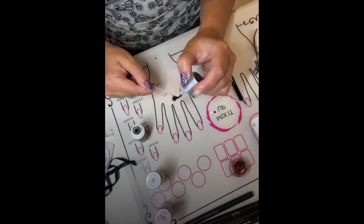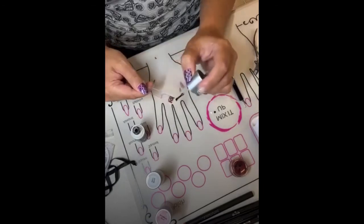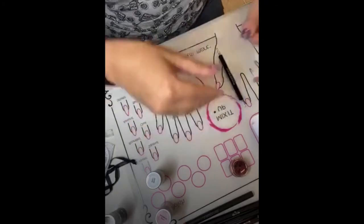Brush it forward again to smooth out the tip of the nail, then you're going to cure that for 45 seconds.